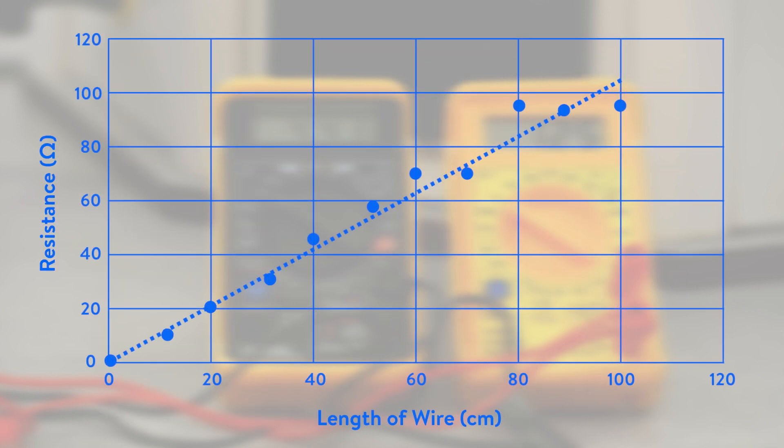Plot a graph of resistance against length for the resistance of the wire. Your results should look something like this. Your results should show that the longer the piece of wire, the higher the resistance of the wire. The straight line of the graph shows that resistance of a wire is directly proportional to the length.